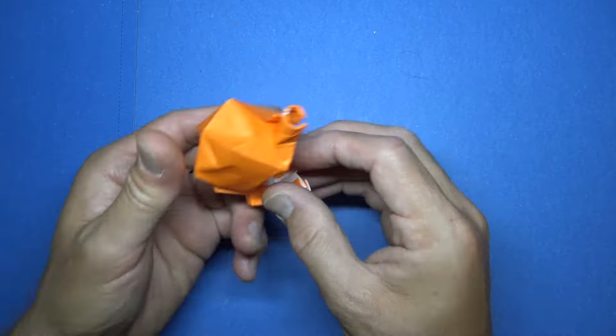And fold these two corners to these two points where the creases touch the edges. And unfold. And turn over top to bottom.